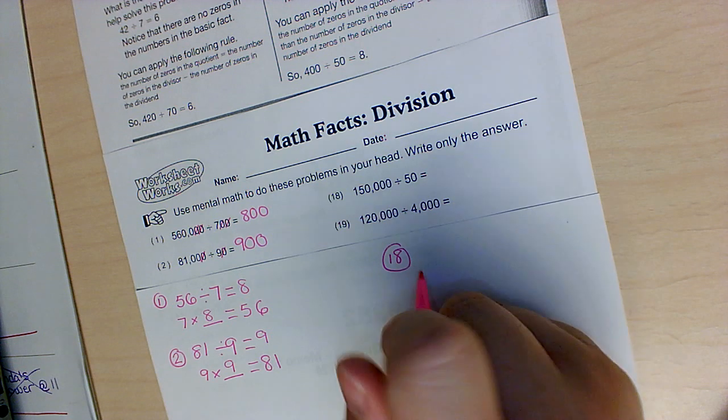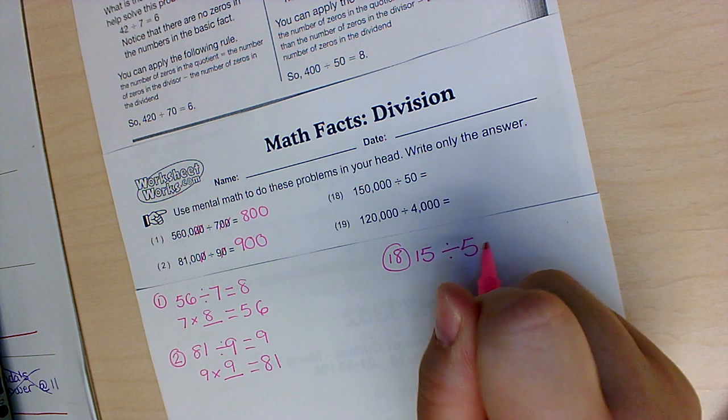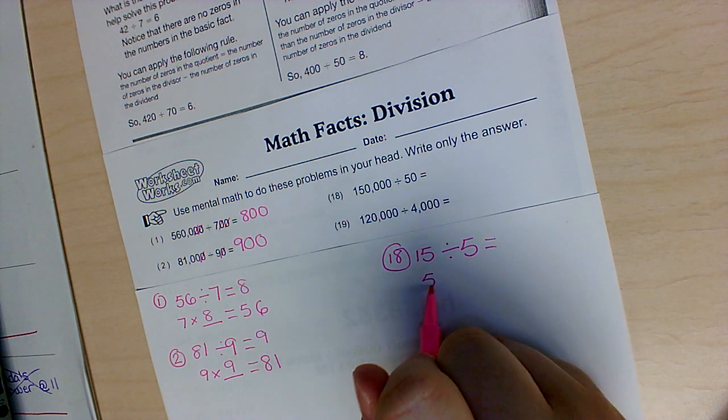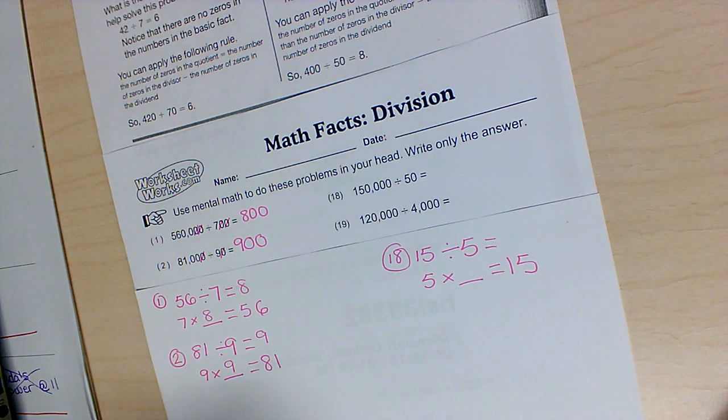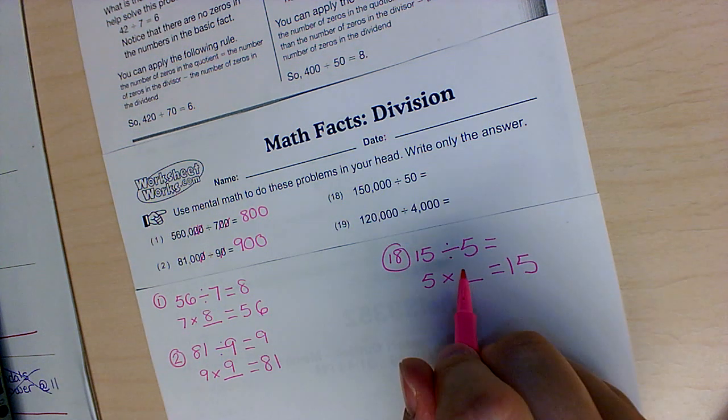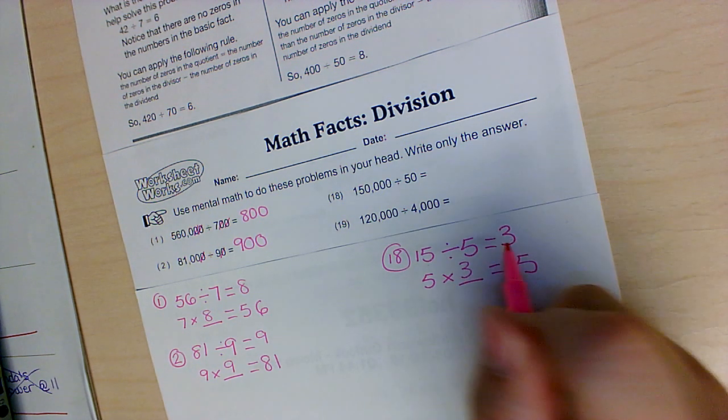So what equals 15 divided by 5, or 5 times what equals 15? I know 5 times 3 is 15. So 15 divided by 5 equals 3.